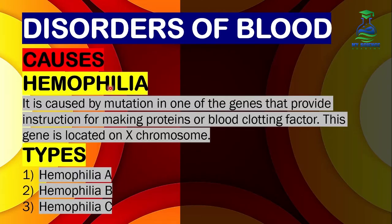What are the causes of hemophilia? It is caused by a mutation in one of the genes that provide instructions for making blood clotting proteins or clotting factors. This gene is located on the X chromosome. So the main cause of hemophilia is a gene mutation.